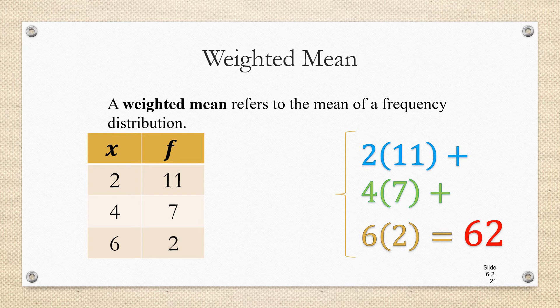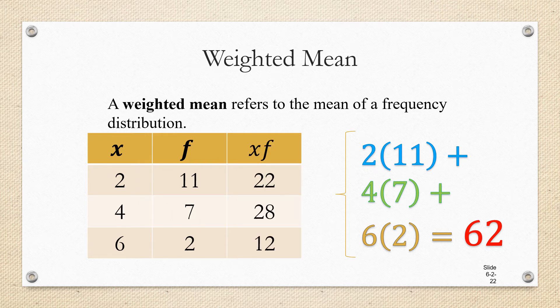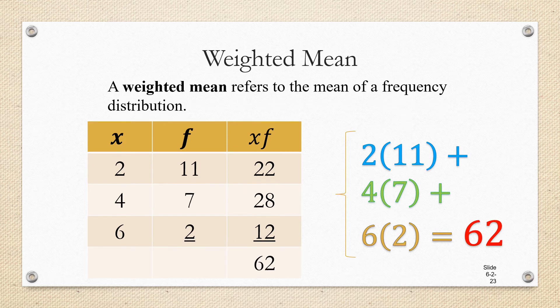So in fact, what we could have done is create a third column, x times f, the data value times the frequency. The first entry would be 2 times 11 is 22, second is 4 times 7 is 28, and the third is 6 times 2 is 12. Then we could just add up those products, and we would get the same result. So this is going to be a shortcut we can use to find the weighted mean, or the mean of data values when they're given to us in a frequency distribution. Let's go ahead and finish finding the mean of these data values.